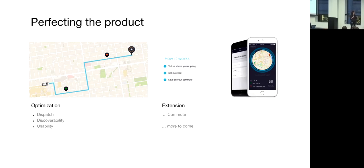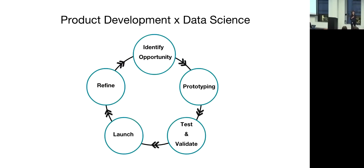For the future, we're now starting to explore different ways that we can leverage this technology that we've built for different use cases, such as Commute, and this effectively restarts the product life cycle for us. I hope that these examples have given you an idea of some of the things that we're building here at Uber and the role that data science plays in all of that. Now I'm going to be handing it over to Fran, who is a data science manager on the intelligence systems program.